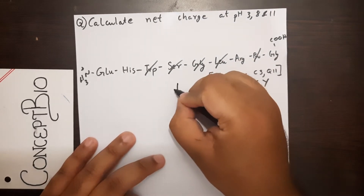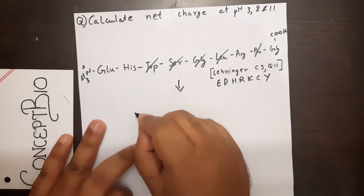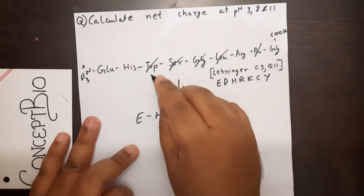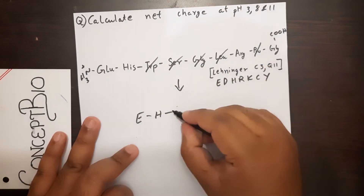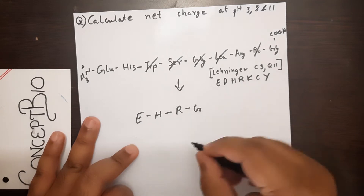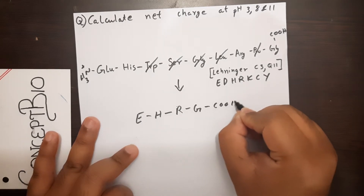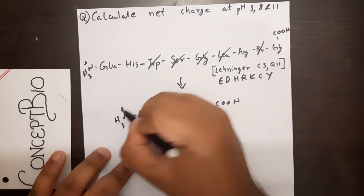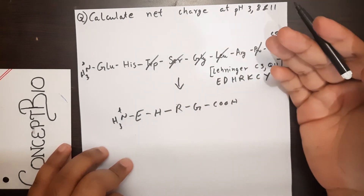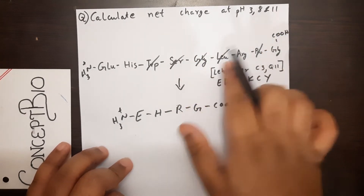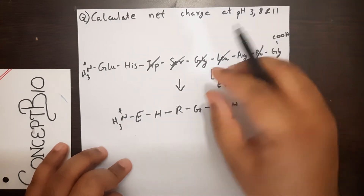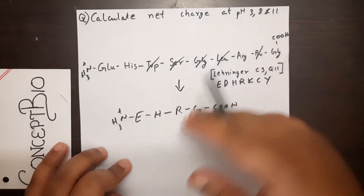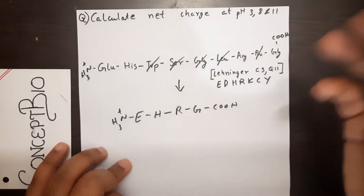So this effectively comes down to E (glutamic acid), H (histidine), R (arginine), G (glycine), with COO-H terminal and NH3+ terminal. The reason I cancel out the internal amino and carboxyl groups is that in a peptide bond they condense and no longer participate in protonation and deprotonation.